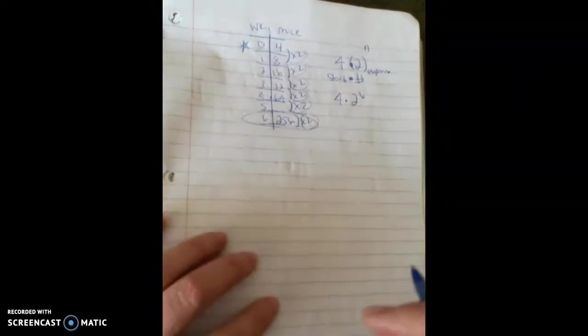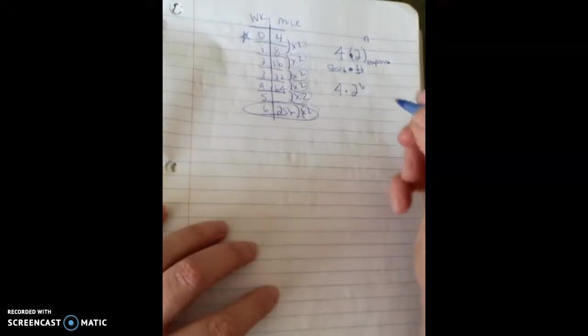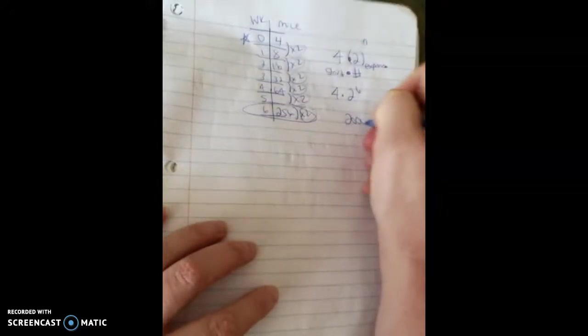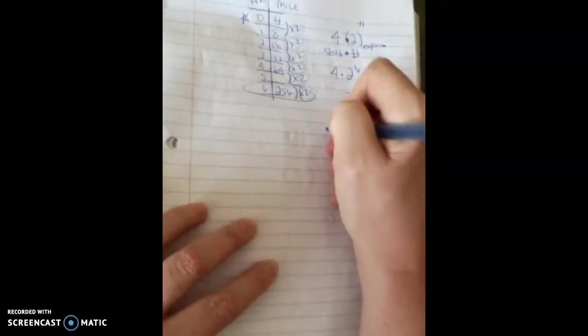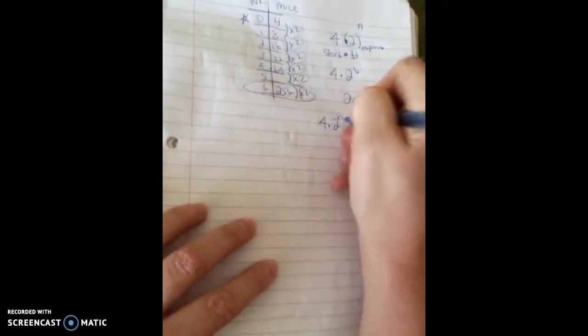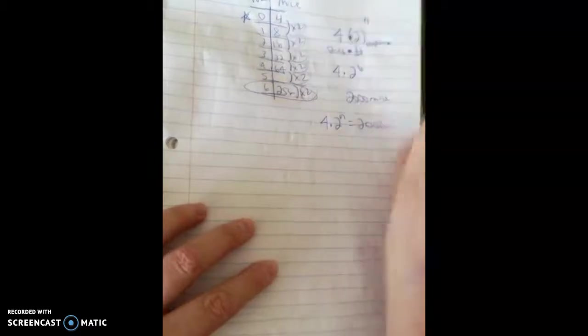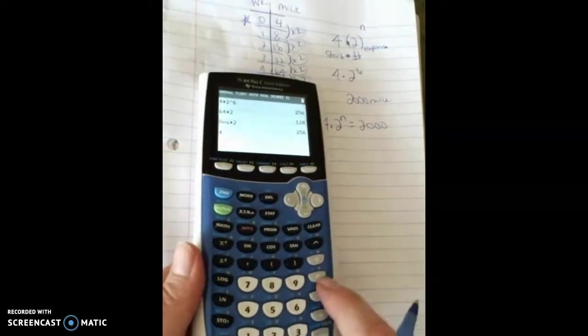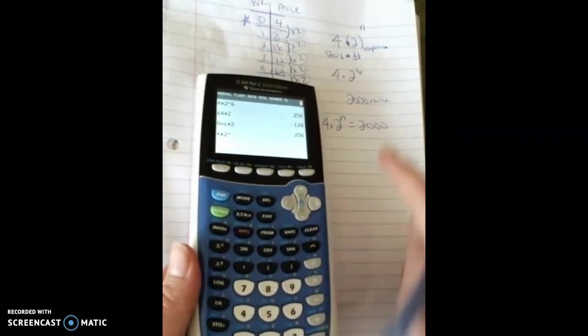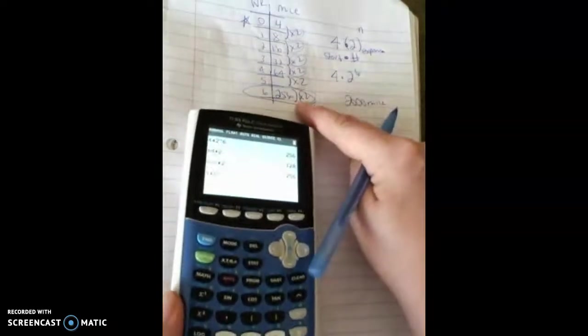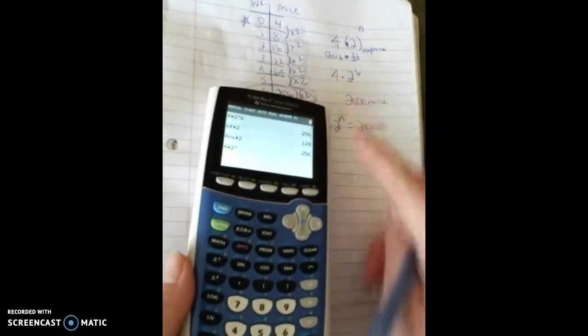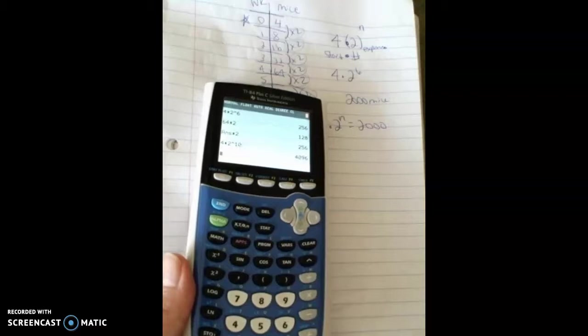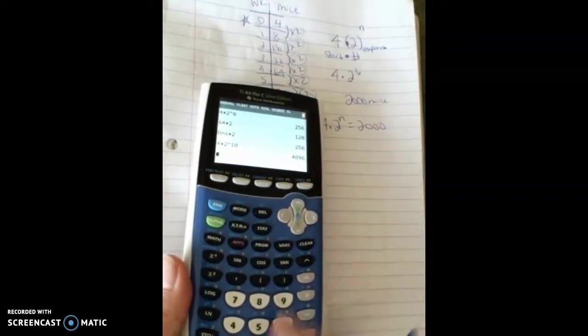Now, if I want to know when my mouse population hits, say, 2,000 mice, then I want to know when the output to this function is going to be 2,000. And logs are beyond this class. We don't do logarithms in this class, so we're just going to guess and test here. So I'm going to take four times two raised to the, and when I did six, I only got that. But again, things get big fast. So I might try 10 and that might be way over.